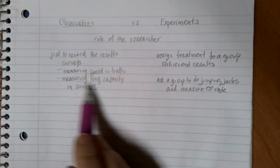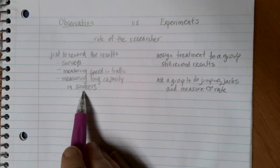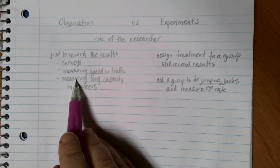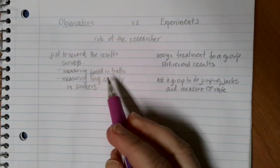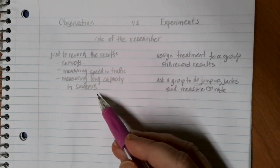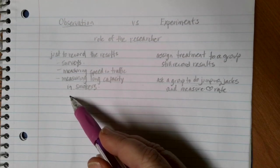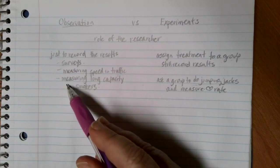This is different than measuring lung capacity in smokers. I'm not going to choose a group and tell them to smoke and then measure their lung capacity. That's not ethical. So instead, what we have to do is collect people who already smoke and then just do measurements or observations of what's occurred.